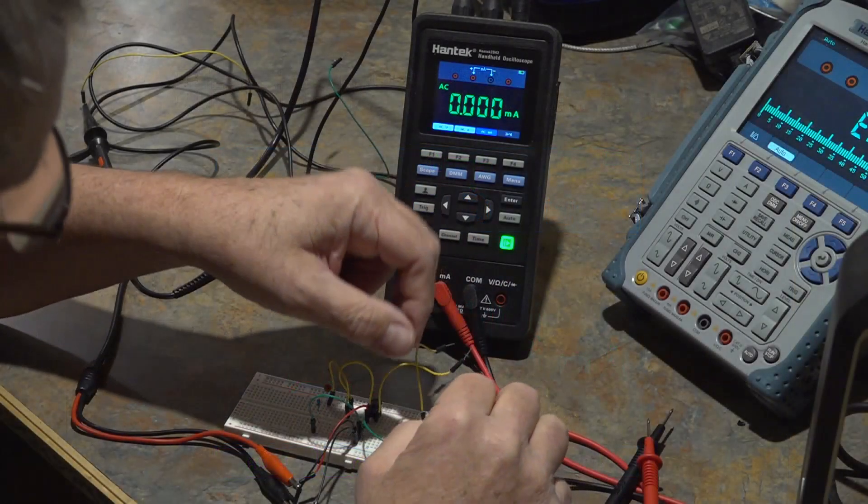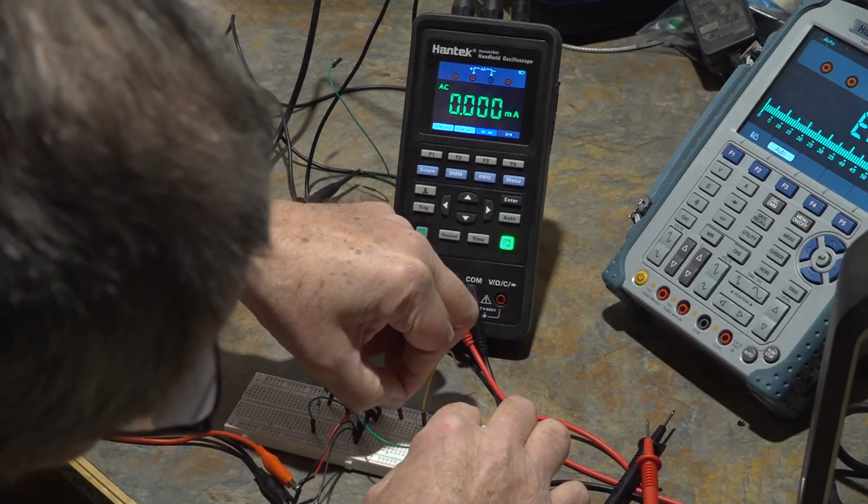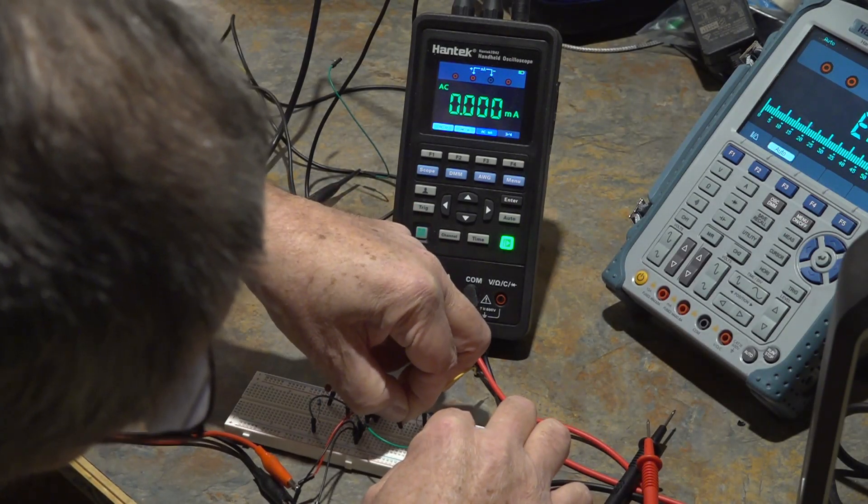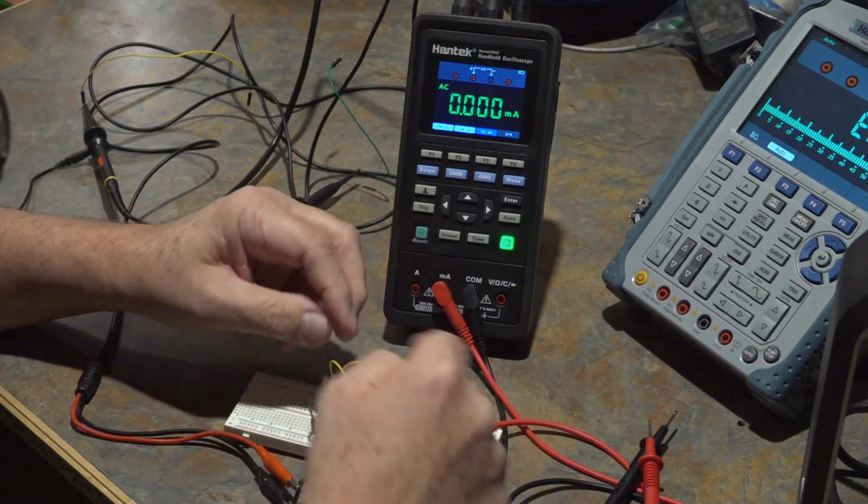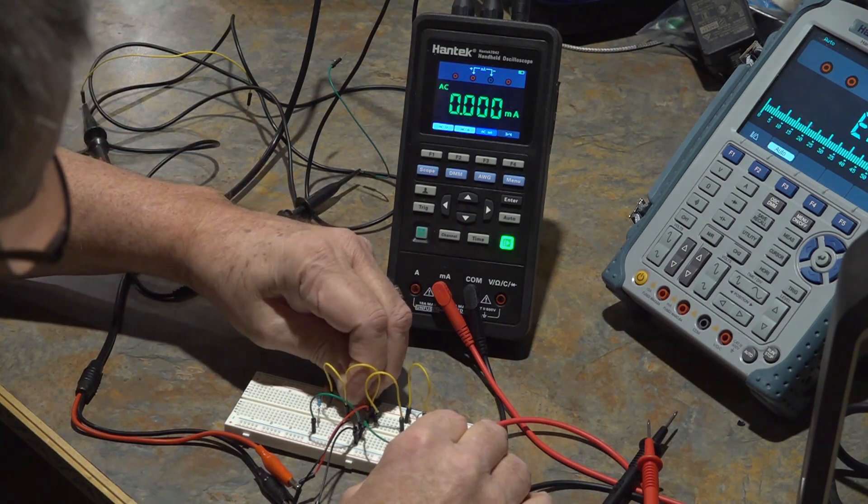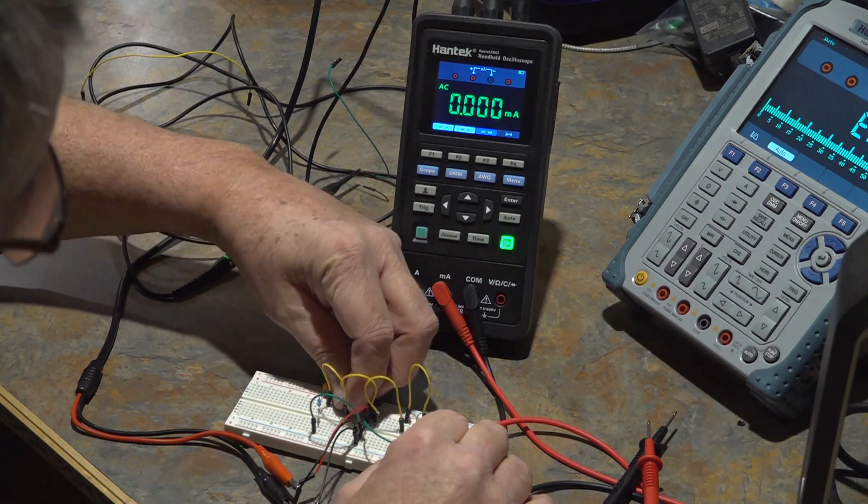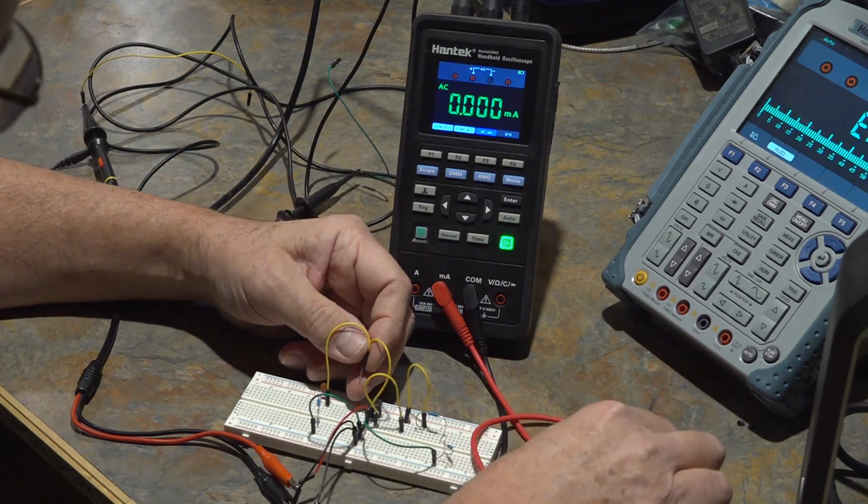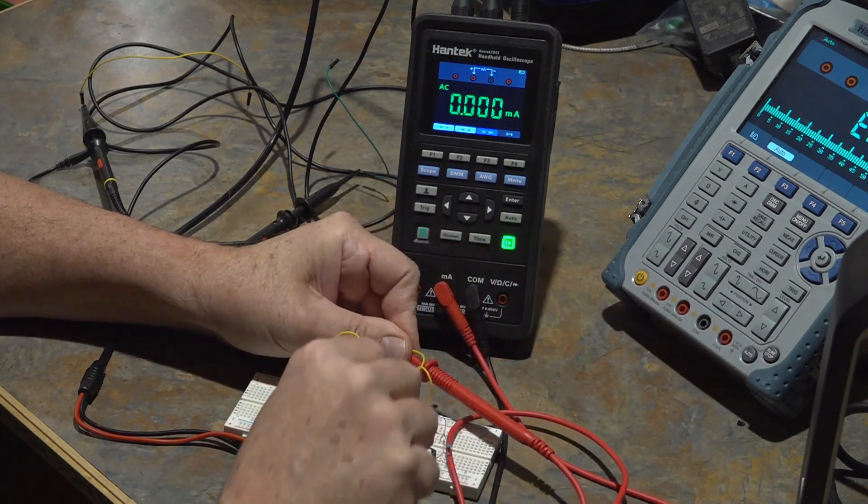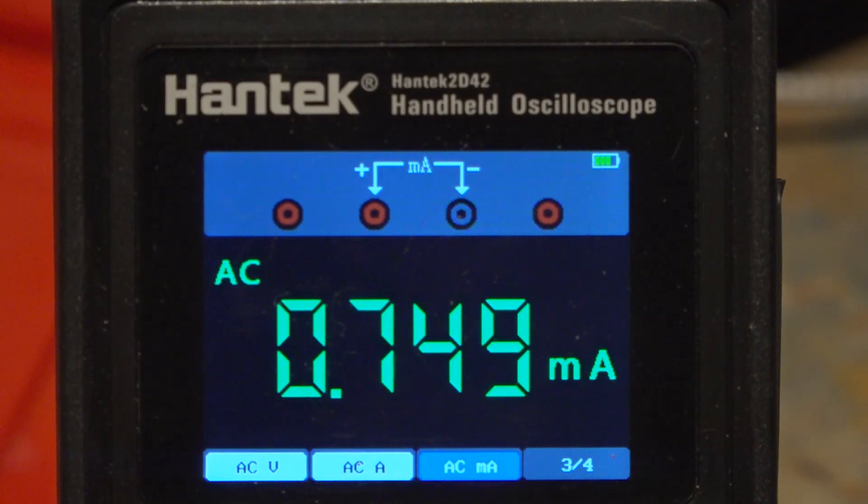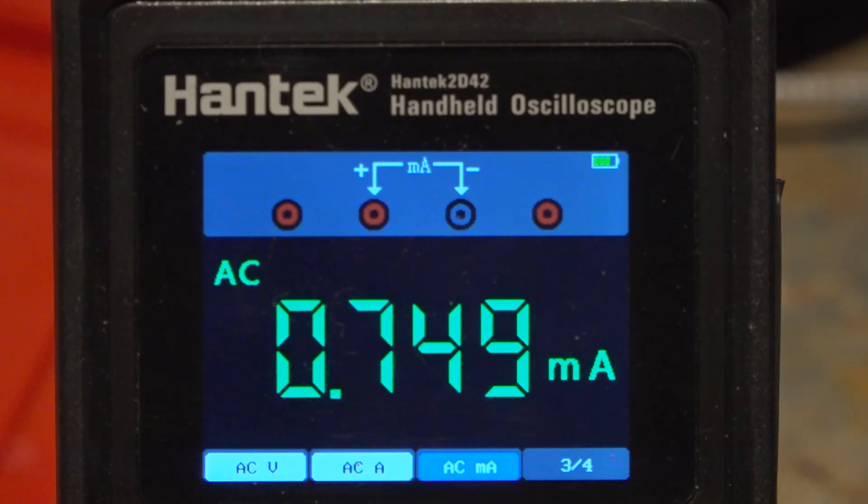I decided to check the current on the other side as well. I'm going to re-establish the path on the choke side and I'll slide over and disconnect the current monitoring path on the capacitor side. Again, I'll use my scope probes with the plus side closest to the generator and I'll measure the current there. I'm getting 0.749 milliamps.